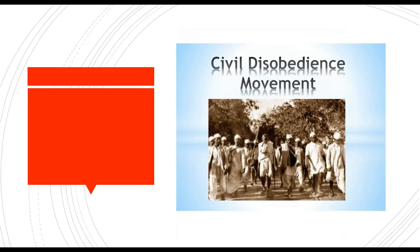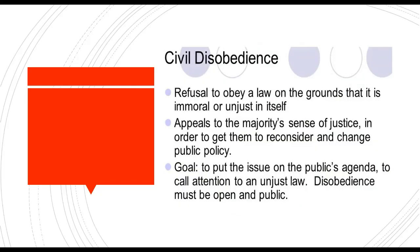The civil disobedience movement of 1930. Civil disobedience is a refusal to obey a law on the grounds that it is immoral or unjust in itself. It appeals to the majority's sense of justice in order to get them to reconsider and change public policy. The main goals are to put the issue on the public's agenda and to call attention to an unjust law; disobedience must be open and public.